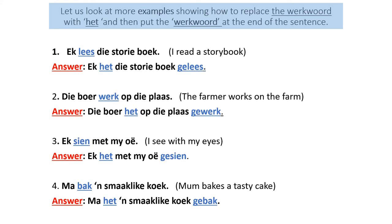Number three: Ek zien met mijn oor. I see with my eyes. The answer: Ek het met mijn oor gezien. Number four: Ma bak a smaaklike koek. Mum bakes a tasty cake. The answer: Ma het a smaaklike koek gebak.